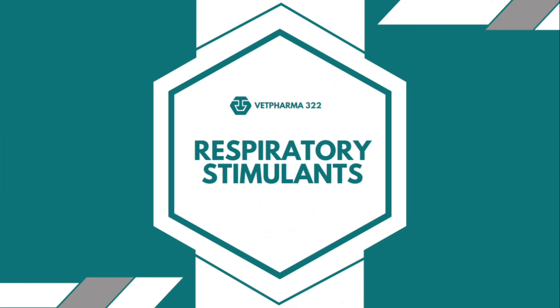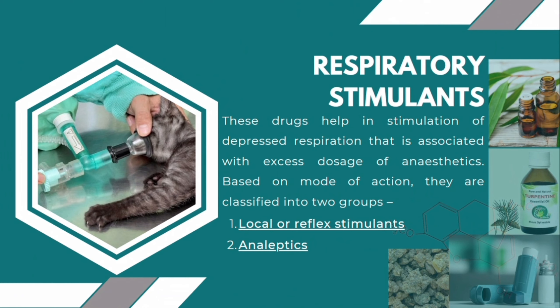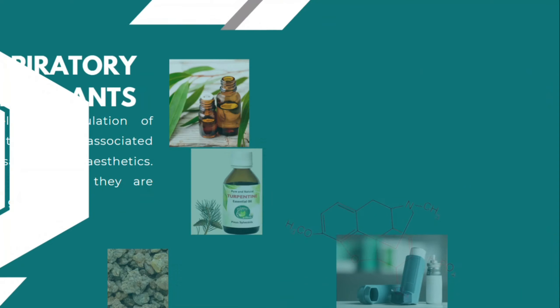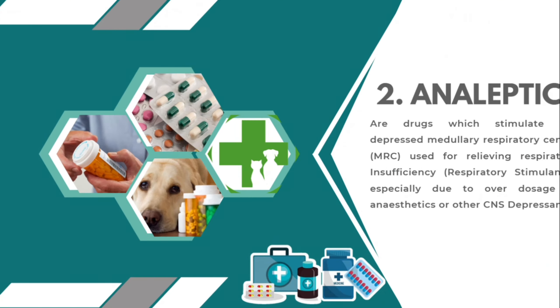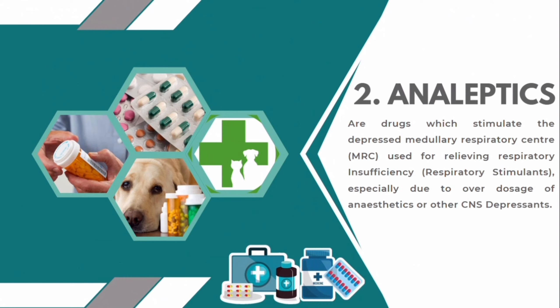Respiratory stimulants are drugs that help in stimulation of depressed respiration, which is associated with excess dosage of anesthetics. Based on mode of action, they are classified into two groups: local or reflex stimulants and analeptics. Local or reflex stimulants work through inhalation of ammonia gas from a strong solution of ammonia or ammonium chloride, which reflexly stimulates both respiratory and vasomotor centers. Analeptics are drugs which stimulate the depressed medullary respiratory center and are used for relieving respiratory insufficiency, especially due to overdosage of anesthetics or other CNS depressants.